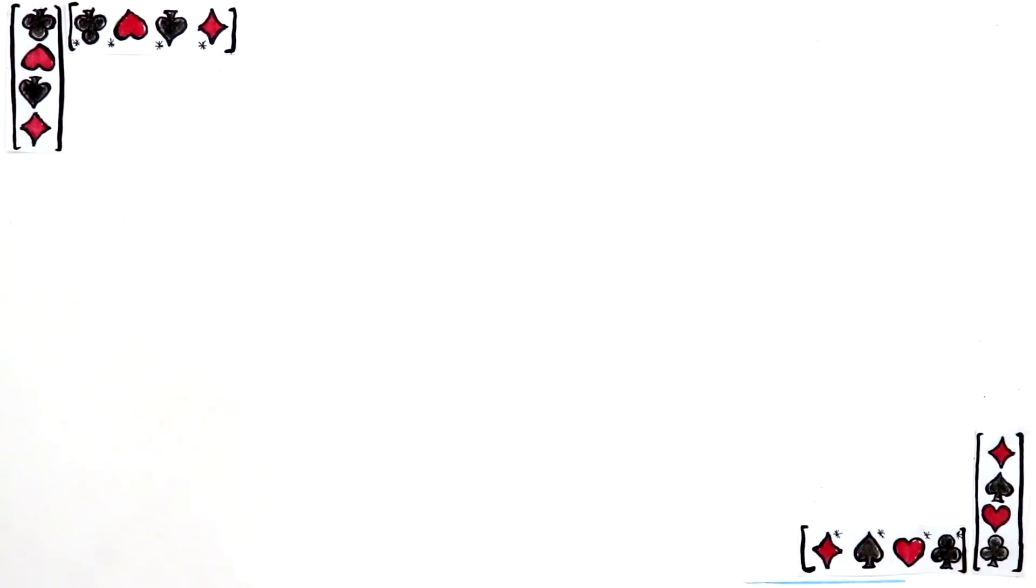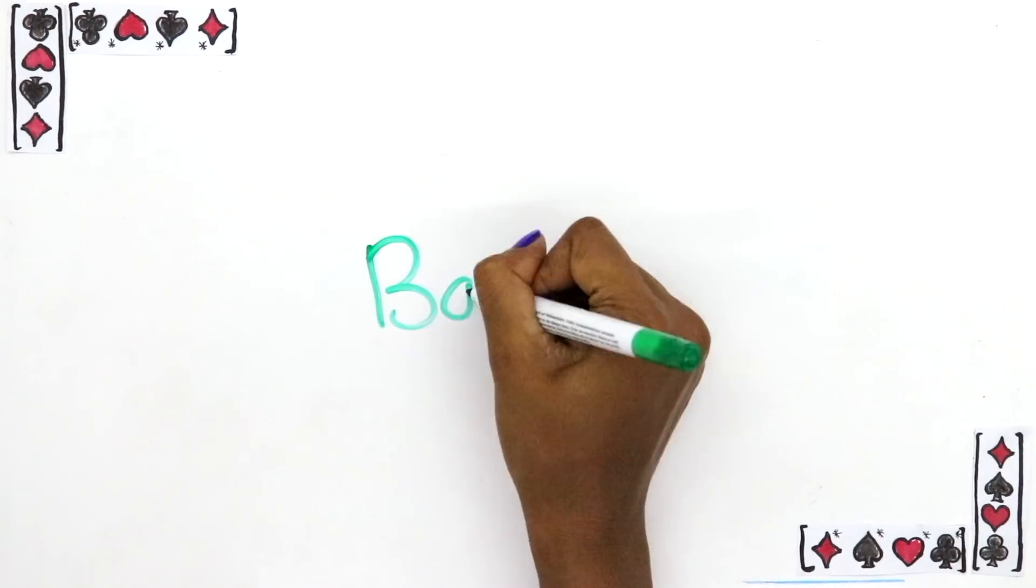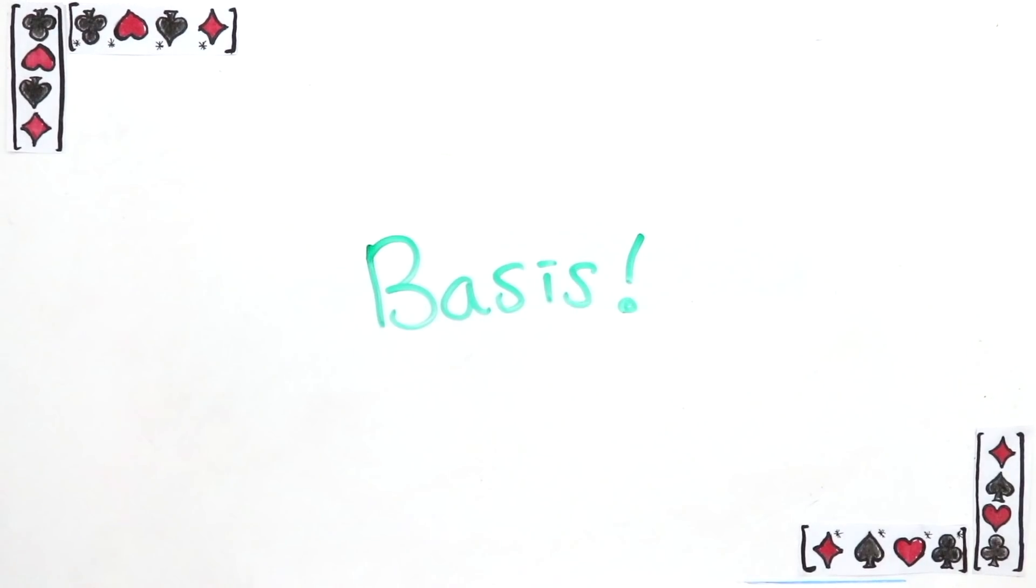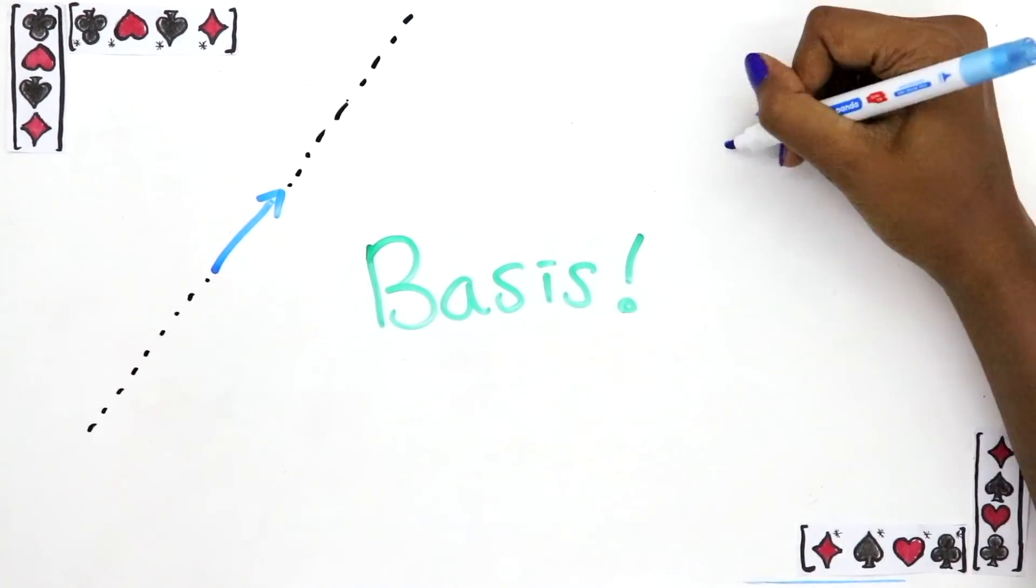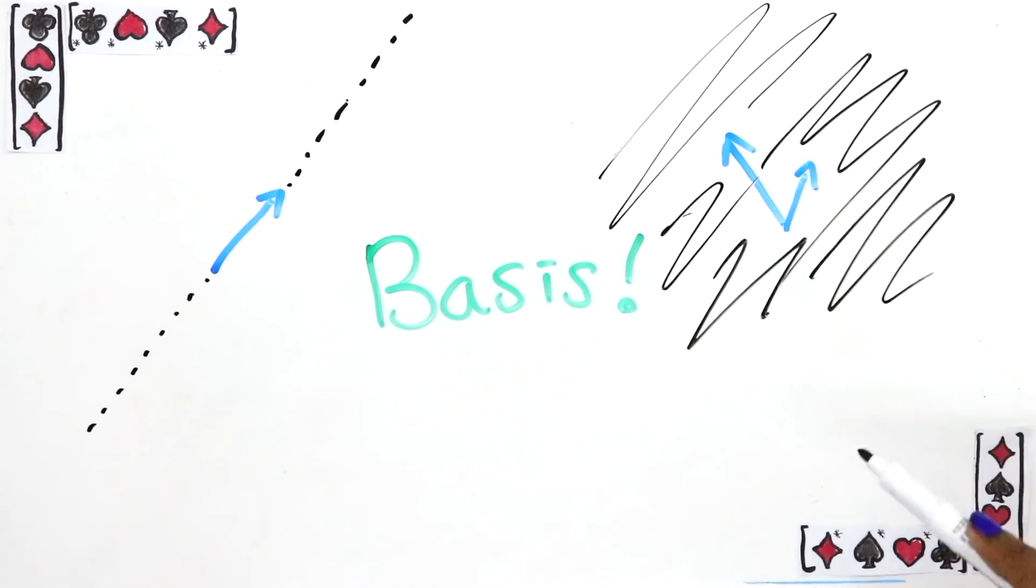Now if you've understood everything so far, you've understood one of the most important ideas in linear algebra, and that's the idea of a basis. We saw in our examples that a line can be spanned by just one vector, a plane can be spanned by two, and 3D space can be spanned by three vectors. But only if you don't have any redundancies.